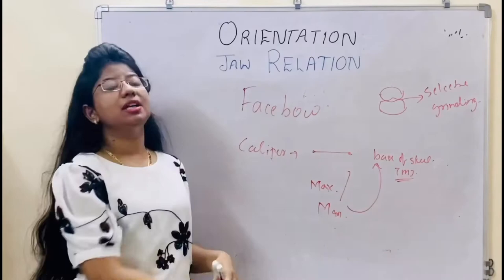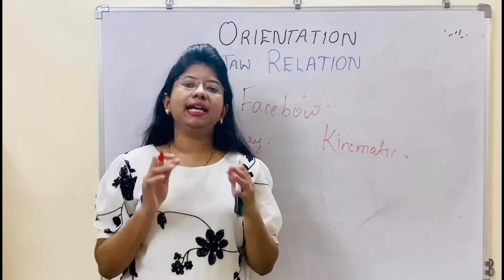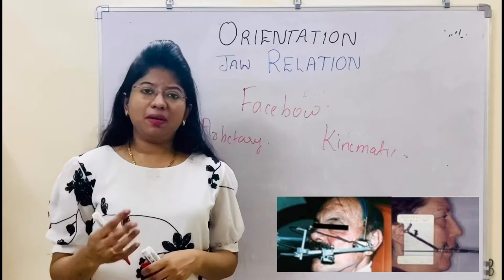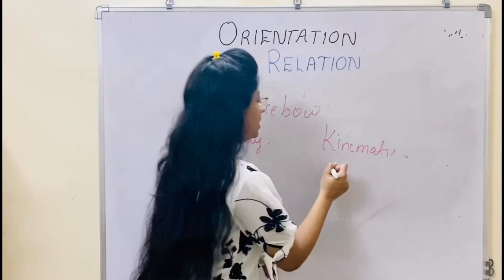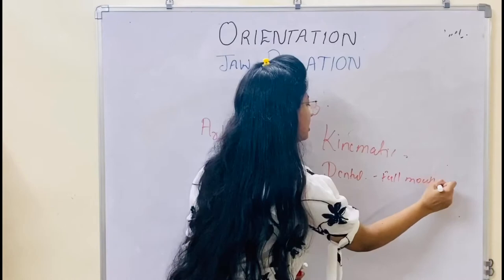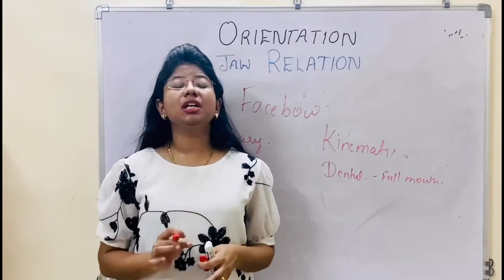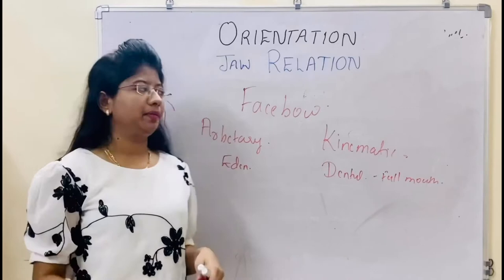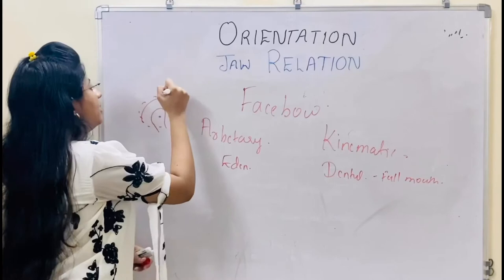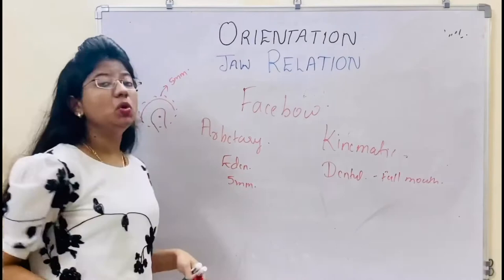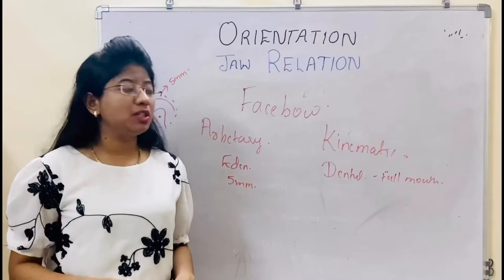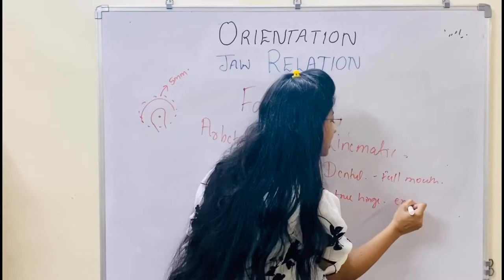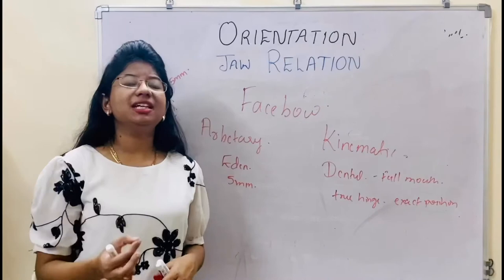There are two main types of face bows: arbitrary face bow and kinematic face bow. The basic difference is that the arbitrary face bow is mainly used in edentulous patients, and the kinematic face bow is used with dentulous patients or full mouth rehabilitation cases. The major difference is that the arbitrary face bow records the axis arbitrarily — the recording of the axis is within a vicinity of 5 mm, so it does not record the accurate hinge axis. While the kinematic face bow records the true hinge axis — the exact position.